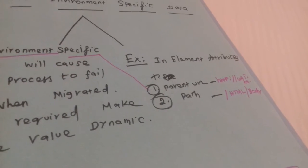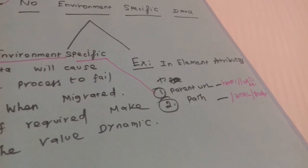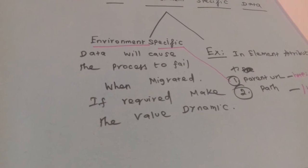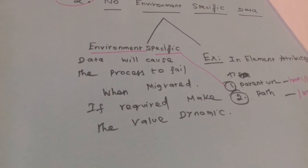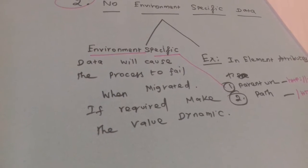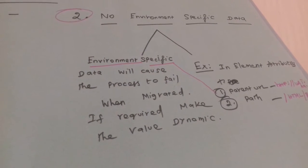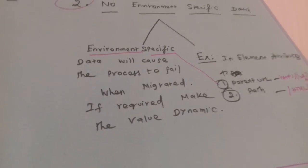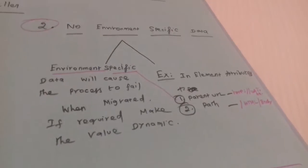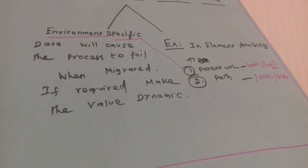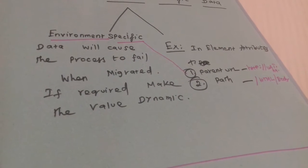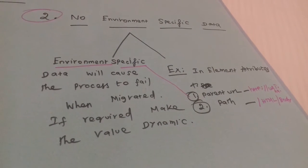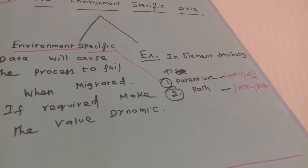That time, parent URL and path, these types of things are environment-specific. The data will cause the process to fail when migrated. Whenever you are using environment-specific data, if required, make the value dynamic, especially if you are moving from UAT environment to production environment.